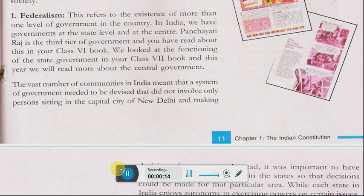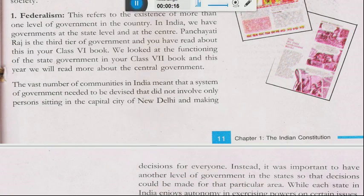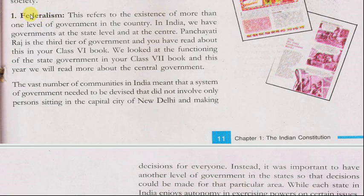We are learning about key features of the Indian Constitution. The first key feature is Federalism, also known as Sanghwad. It refers to the existence of more than one level of government in the country. In India, we have governments at the state level and at the center.